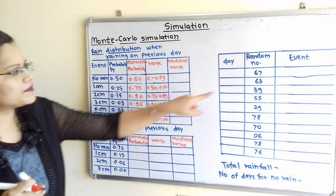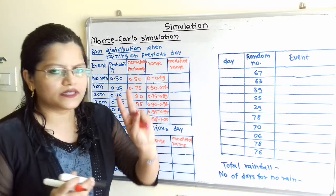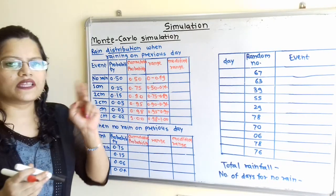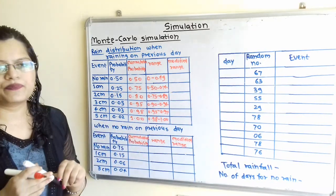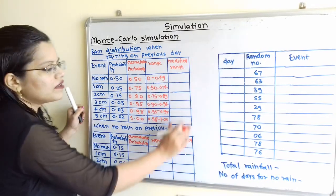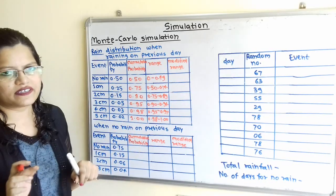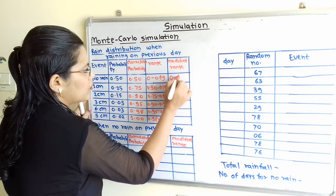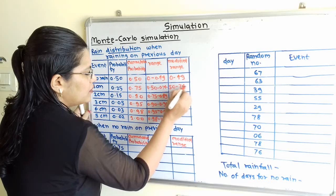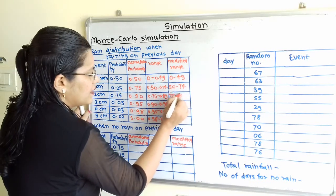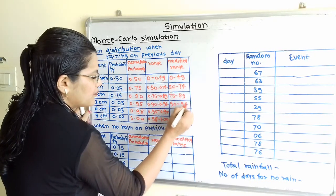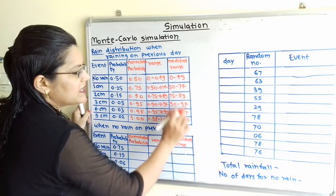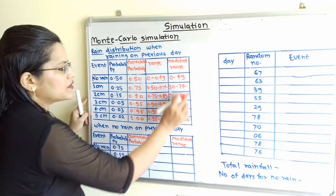Now, if we observe the random numbers, they are all two-digit numbers. So if we multiply each range number by 100, then we can fit all this data. We will make one extra column for modified range and multiply by the constant 100. So the modified ranges are: 0 to 49, 50 to 74, 75 to 89, 90 to 94, 95 to 97, and 98 to 100. Now we can easily fit all these random numbers within this range.